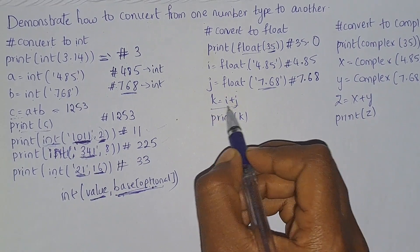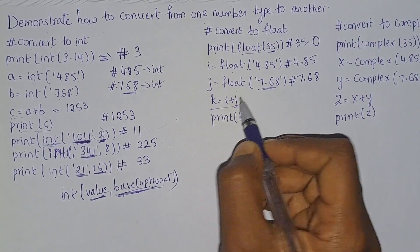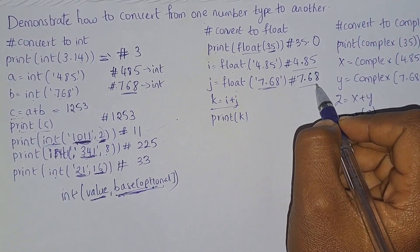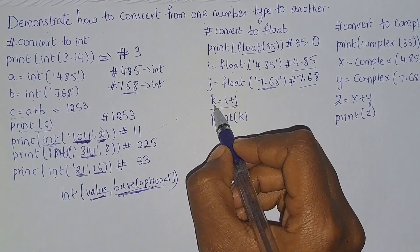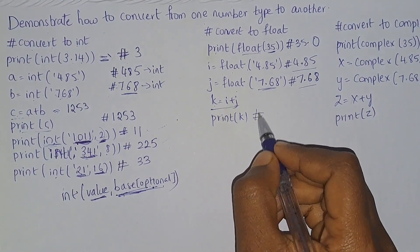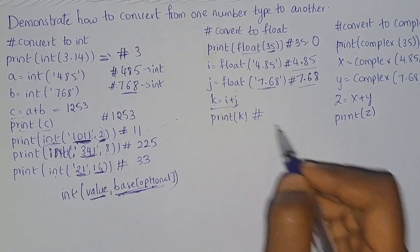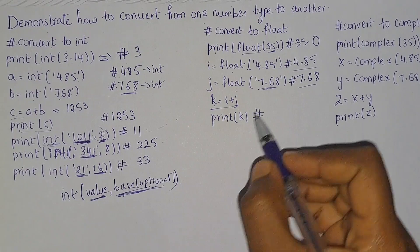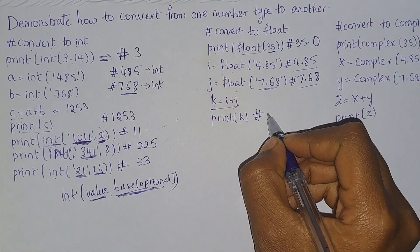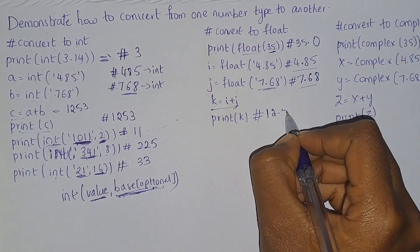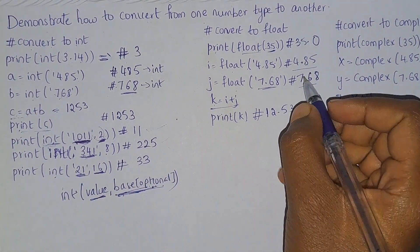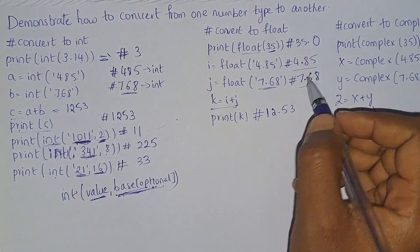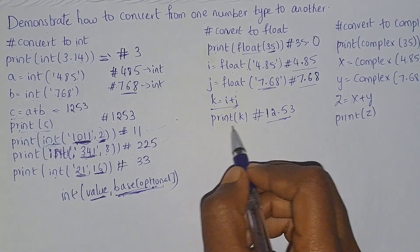Here we are performing j plus i, adding these two float values into k, and printing the value of k.